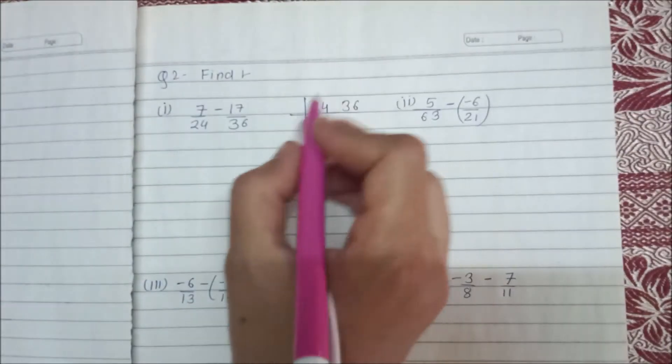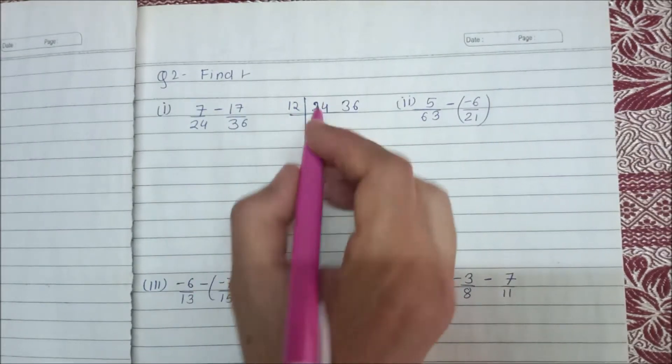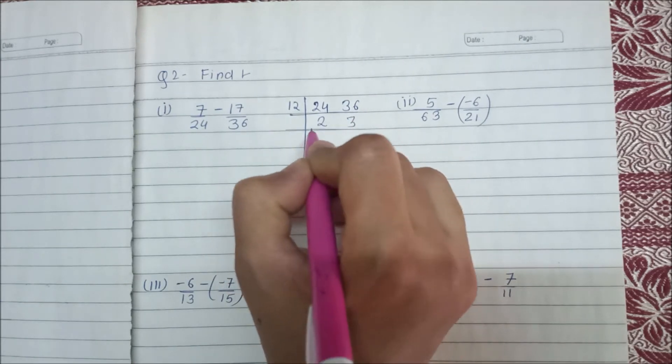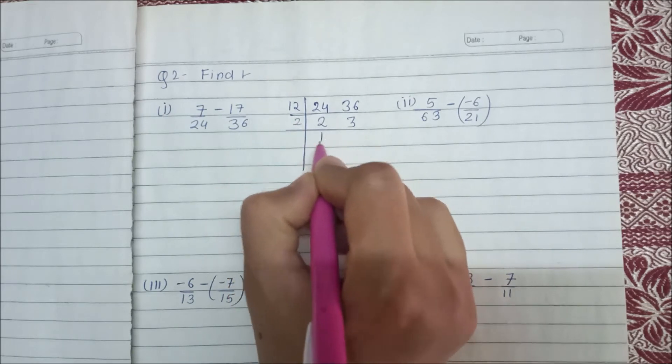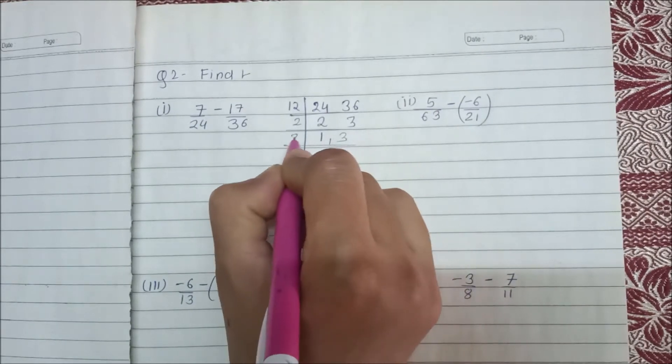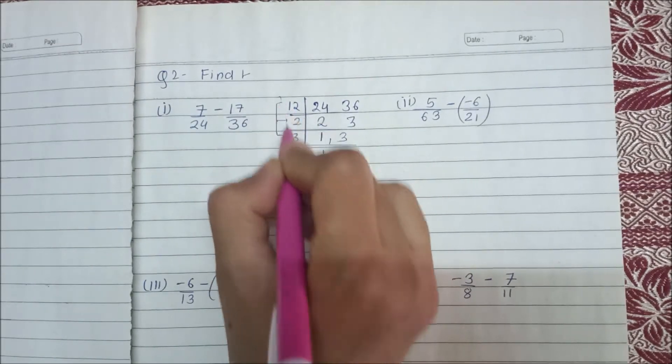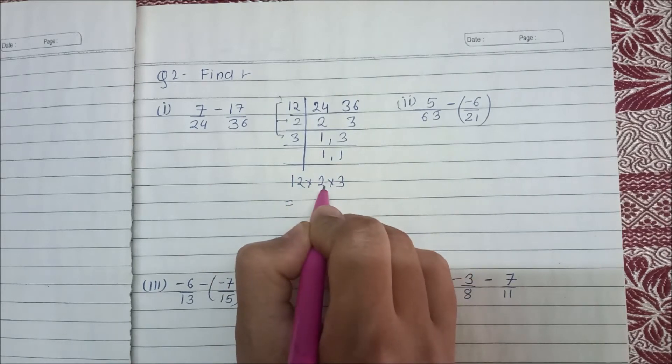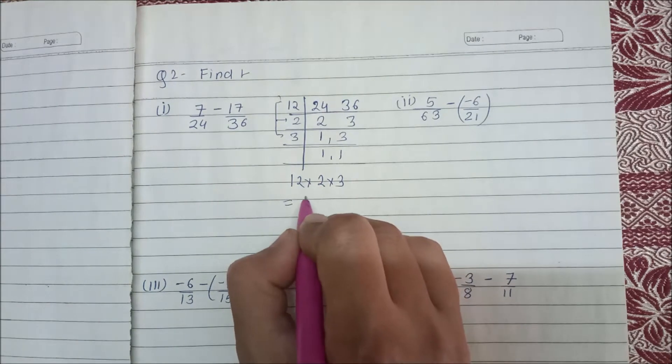24 and 36, we will start with 12 because 12 times 2 is 24 and 12 times 3 is also 36, right? Now we will divide by 2, so we will get 2 and 3. Then 3 as it is, again 3 will be divided, and this will be 1.